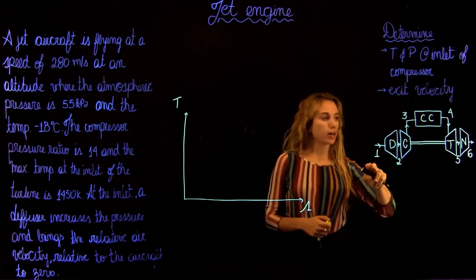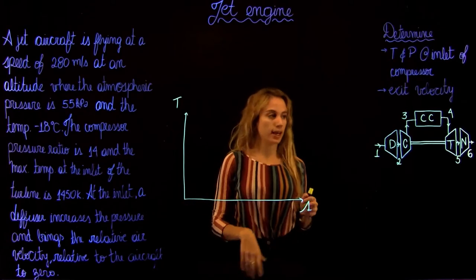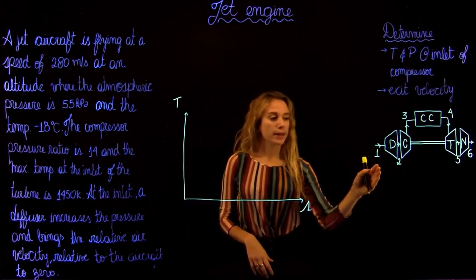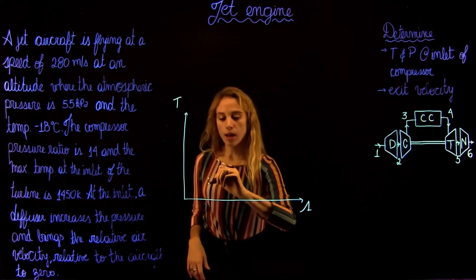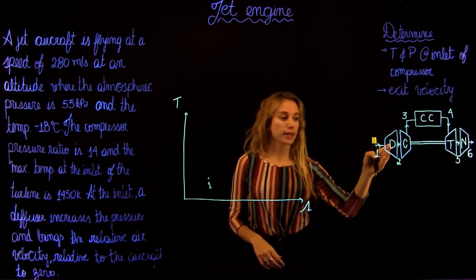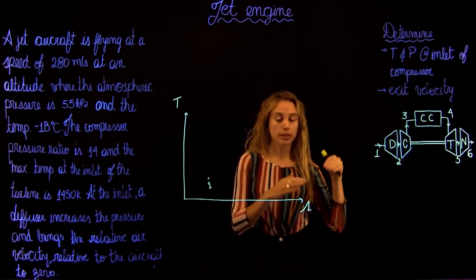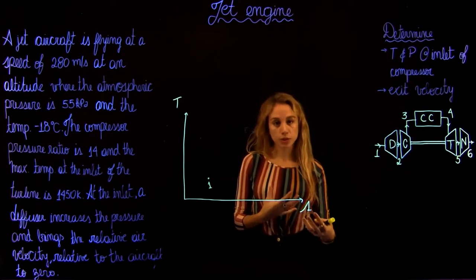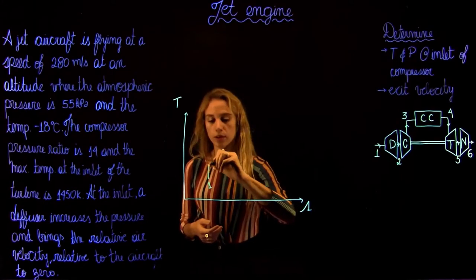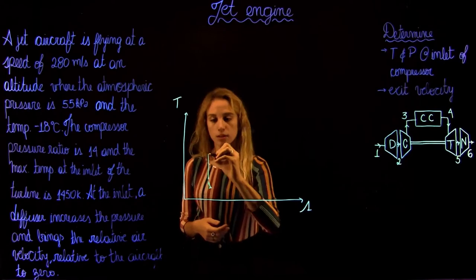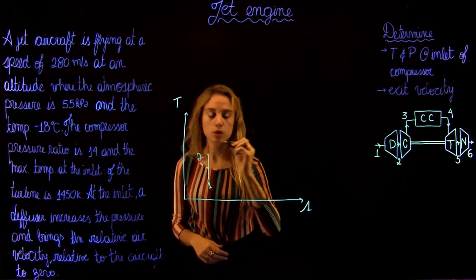This is what our process diagram looks like and we're going to start by drawing our TS graph. The fluid is going to enter at state 1, then it's going to get expanded in the diffuser. The velocity is going to decrease, and due to Bernoulli's equation, we're going to have an increase in pressure. So we're going to go with a constant entropy increase in temperature.